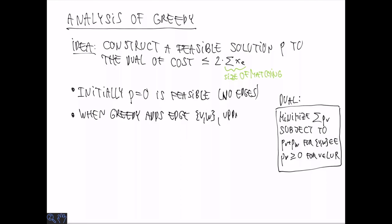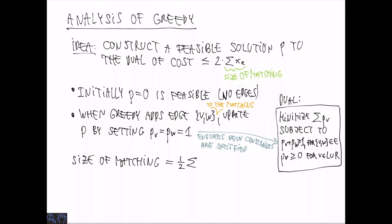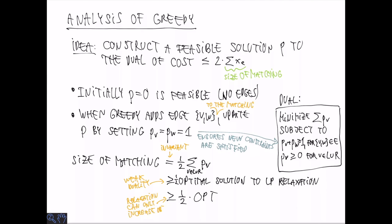So when greedy adds an edge, let's say from V to W, we need to update P to make sure that the constraints are met. And the way we can do this is to simply set both PV and PW equal to 1/2. Now let's consider the size of the matching. Since we only increase the P variables when we add an edge, we know that the size of the matching is at least half times the sum of the PV variables. In turn, this is at least half times the optimal solution to the LP relaxation, which in turn is at least half times opt. So here we use weak duality and the fact that relaxation can only increase the objective value.